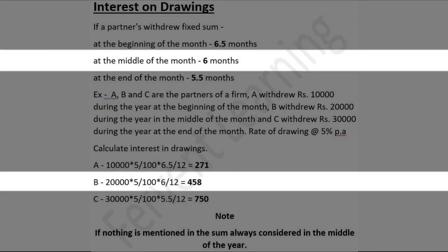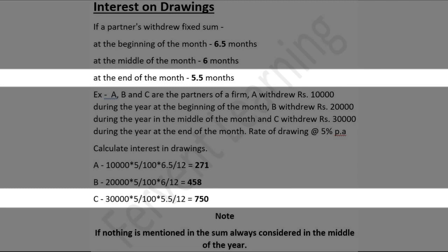Similarly, B ka drawing kitna hai? Twenty thousand. So twenty thousand into five by hundred into six by twelve — six by twelve because B is withdrawing in the middle of the month. After the calculation we get four hundred fifty-eight as interest on drawing for B. In case of C: thirty thousand into five by hundred into 5.5 by twelve, because C is withdrawing at the end of the month.